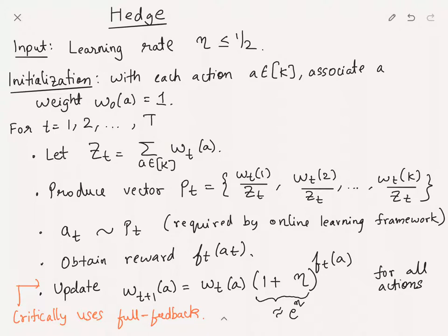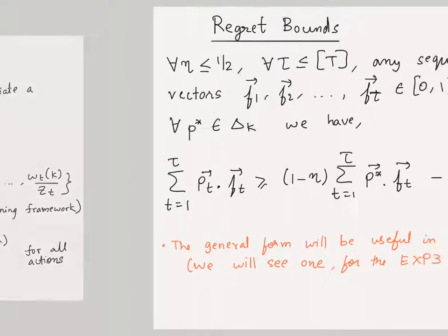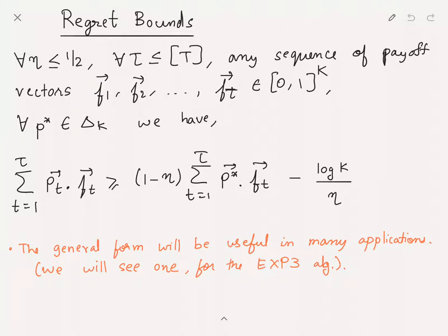Now the algorithm definition is clear. Let me first state what kind of guarantees Hedge gets. I will state a fairly general statement about the guarantee of Hedge. The reason I'm stating this is because this form, this particular guarantee of Hedge, will be useful in many applications. Whenever you would want to use Hedge, you would likely want to use this particular form of guarantee. In fact, for Exp3 we will need this guarantee. Then of course we'll also derive a corollary which will bound the actual regret, which is what we are looking after.